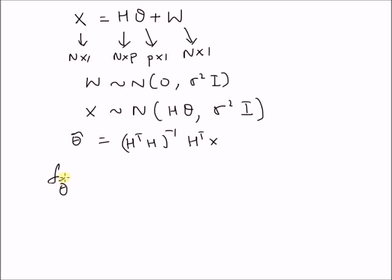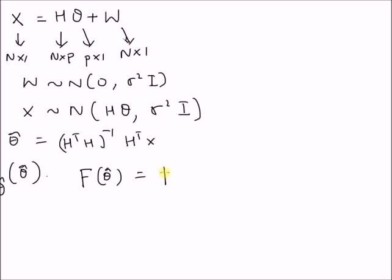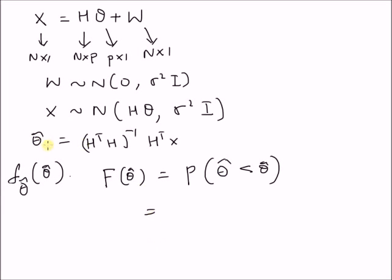That is, we want to find f of theta hat at theta hat. So let us start with the probability distribution function, that is F of theta hat. It is given by the probability that the vector theta hat is less than the value theta hat. This is a random value and this is a realization. By definition, theta hat, the minimum variance unbiased estimator, is given by H transpose H inverse H transpose x, which is less than small theta hat.